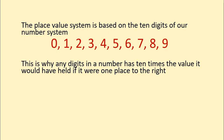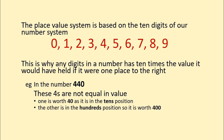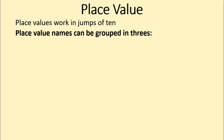In the number 440, there are two 4s, but they do not have the same value because they are in a different place value. One of the 4s is worth 40 because it's a 4 in the tens position, while the other 4 is in the hundreds position, so that means it's worth 400. 400 is 10 times 40. So every time we move up a place value, we need to multiply the digit in that value by 10.